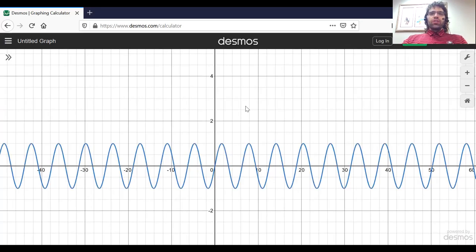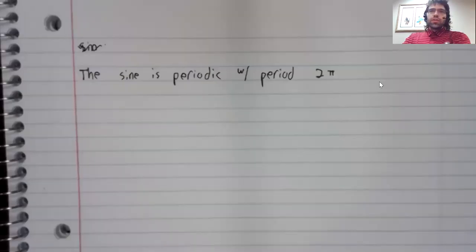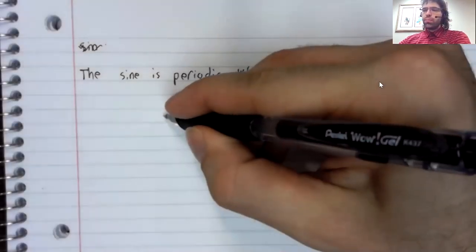Another thing to notice is that this wave pattern keeps repeating forever. The sine is periodic with period 2π.